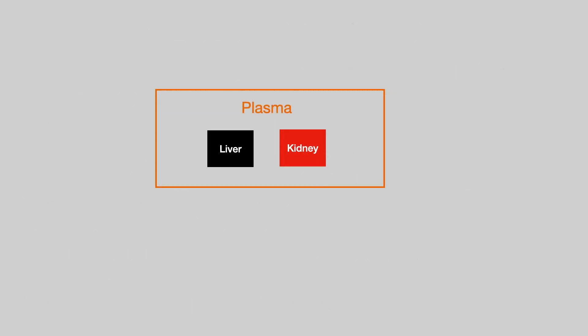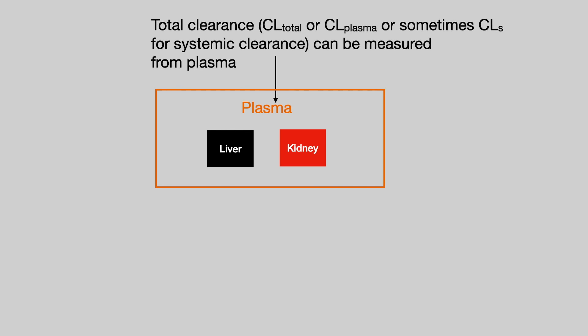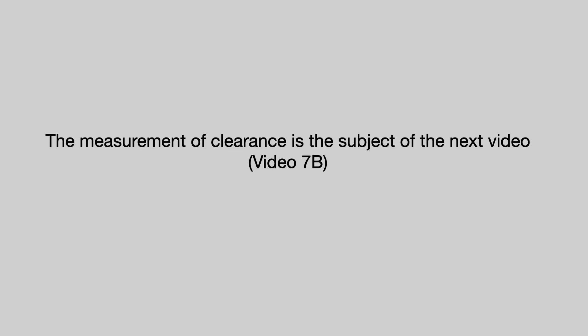Here we have the two main organs of drug elimination — liver and kidneys — sitting in plasma. You can measure total clearance from plasma, and you can also have hepatic clearance from the liver and renal clearance from the kidneys. If we assume that the liver and kidneys are the only organs involved in elimination, then the sum of hepatic and renal clearance will give you total clearance. The measurement of clearance is the subject of the next video, Video 7b.